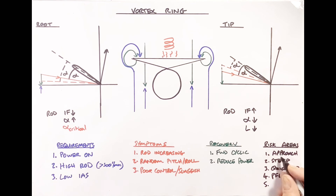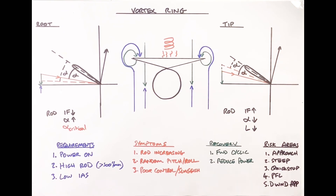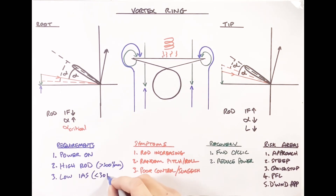Finally, any downwind approach: with the wind behind you, your indicated airspeed is that much lower, putting you straight into the low airspeed bracket while maintaining a high rate of descent with power on. To clarify the numbers: high rate of descent is around 500 feet per minute and above; low airspeed is generally below 30 knots, though this is very much aircraft dependent. That pretty much covers Vortex Ring - any questions or criticisms, feel free to add them in the comments.